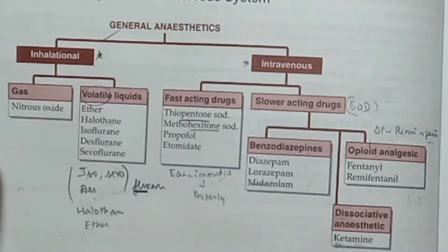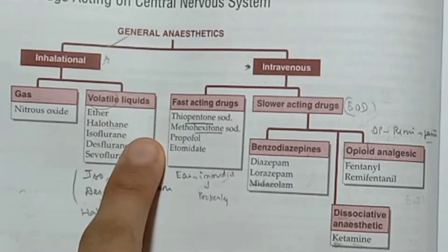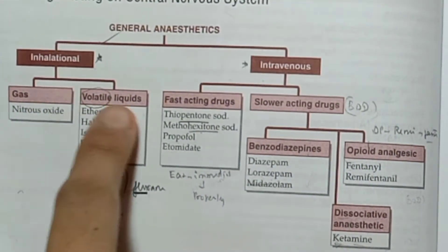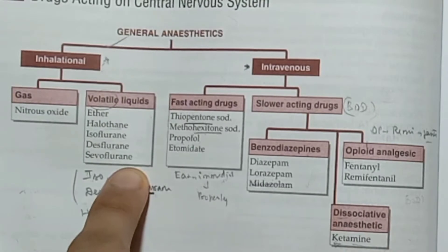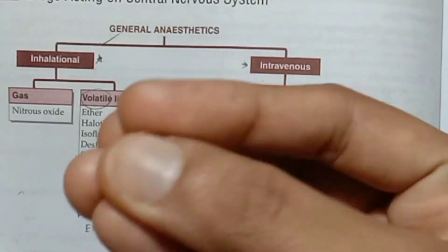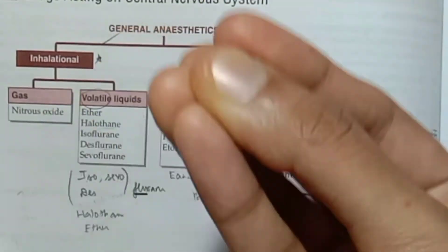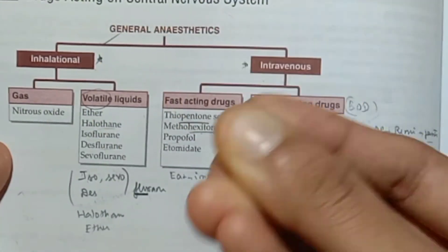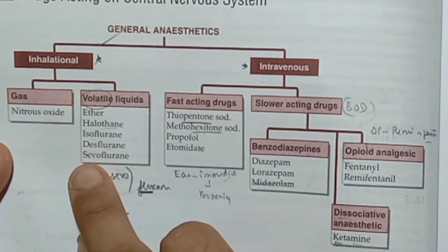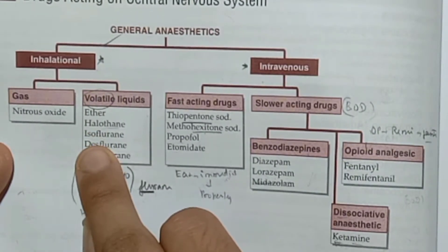Inhalation anesthetics include gas and volatile agents. The gas is nitrous oxide. The volatile agents are the fluorane group of drugs.